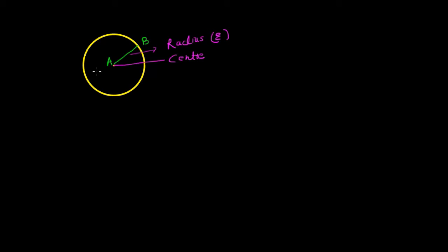The length AB is always equal to the length AC. Generally, the line joining any two points of the circle is called a chord of the circle.